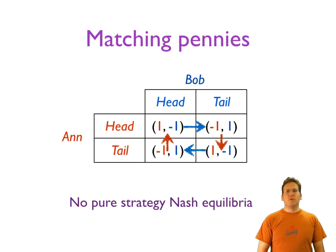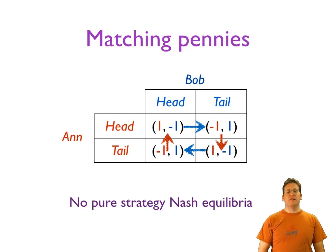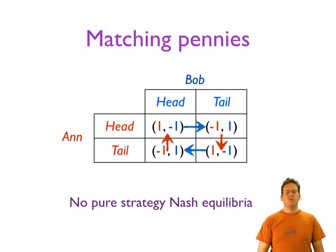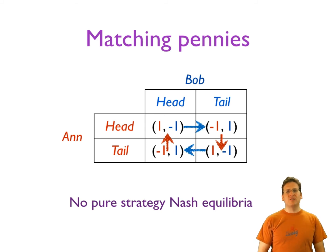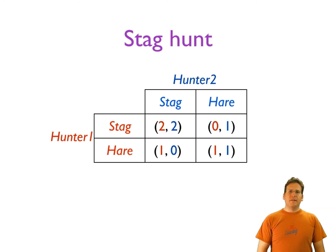There is, however, a mixed strategy Nash equilibrium. A mixed strategy is one where a player doesn't choose a single action but randomizes between available actions. For instance, Anne could simply flip her coin and choose heads or tails each with probability one-half. We'll discuss mixed strategies and mixed strategy Nash equilibria in another video.